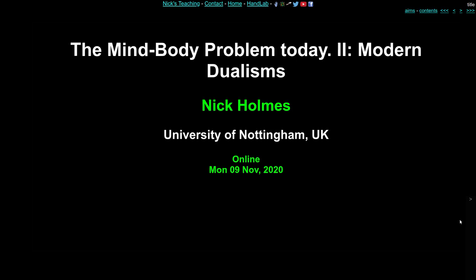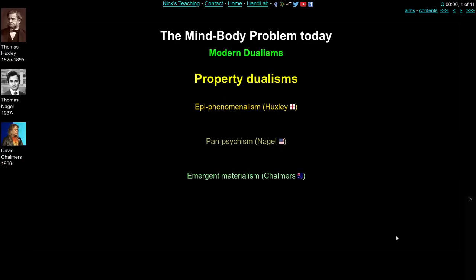In the second part of this modern mind-body problem lecture, we're going to deal with modern versions of the dualism account — that there are two kinds of thing in the universe and they can't really be reduced to one another. The three positions we're going to be covering are property dualisms, the epiphenomenalism of Huxley, the panpsychism of Nagel, and the emergent materialism of Chalmers. We'll take each one in turn and look at a general description, arguments for, and then arguments against.